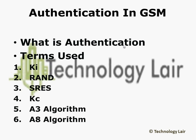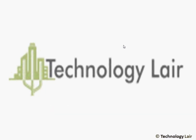The A8 algorithm computes the 64-bit ciphering key KC. The KI and the RAND are inputs to the A8 algorithm and the result is the 64-bit KC. The A8 algorithm resides on the SIM card and the AUC.